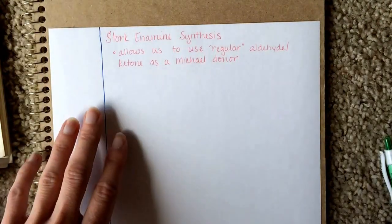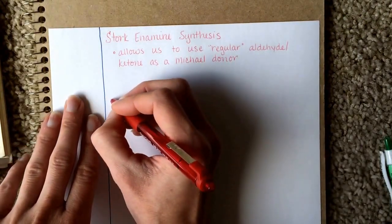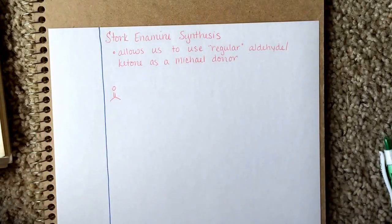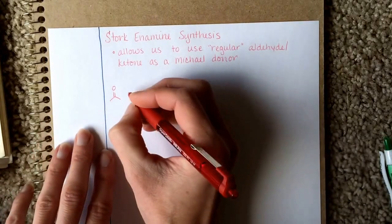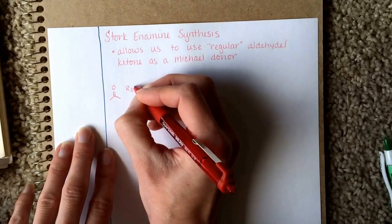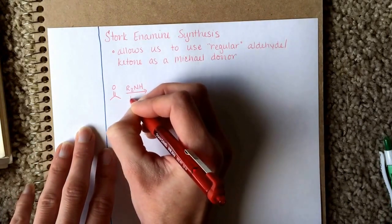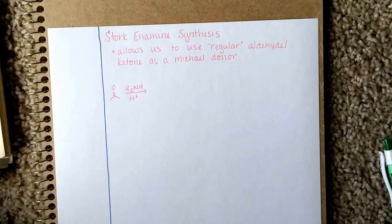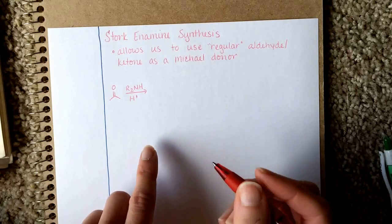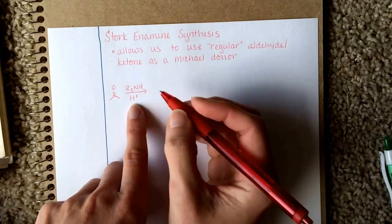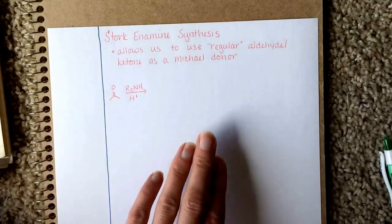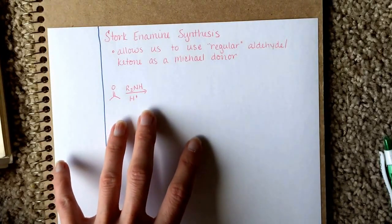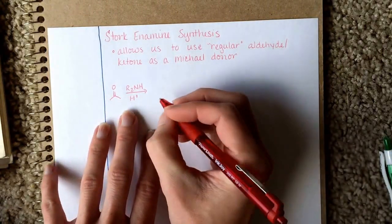So the reaction, the Stork-Enamine Synthesis, is going to look something like this. We're going to take a regular aldehyde or ketone, like acetone. We are going to convert it into an enamine. Go back to Chapter 20 if that's really unfamiliar to you. Convert it into an enamine, and in the process of converting it into an enamine, it just kind of naturally turns itself into an enolate. We'll see that in the mechanism.